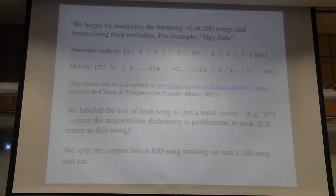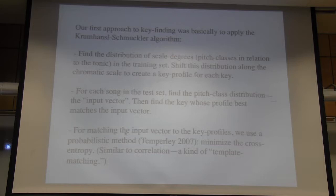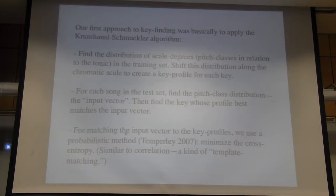We tried a number of approaches to key finding on this corpus. Our first approach was basically the Krumhansl-Schmuckler algorithm: find the distribution of scale degrees in the training set, rotate that distribution along the chromatic scale to create key profiles for each key, then for each song in the test set find the pitch class distribution and find the key whose profile best matches it. For matching, we used a probabilistic method, basically minimizing the cross-entropy between the two — a little different from Krumhansl's correlation method, but the same basic idea of template matching: a good key is one whose key profile has high values for pitch classes that occur frequently in the song.